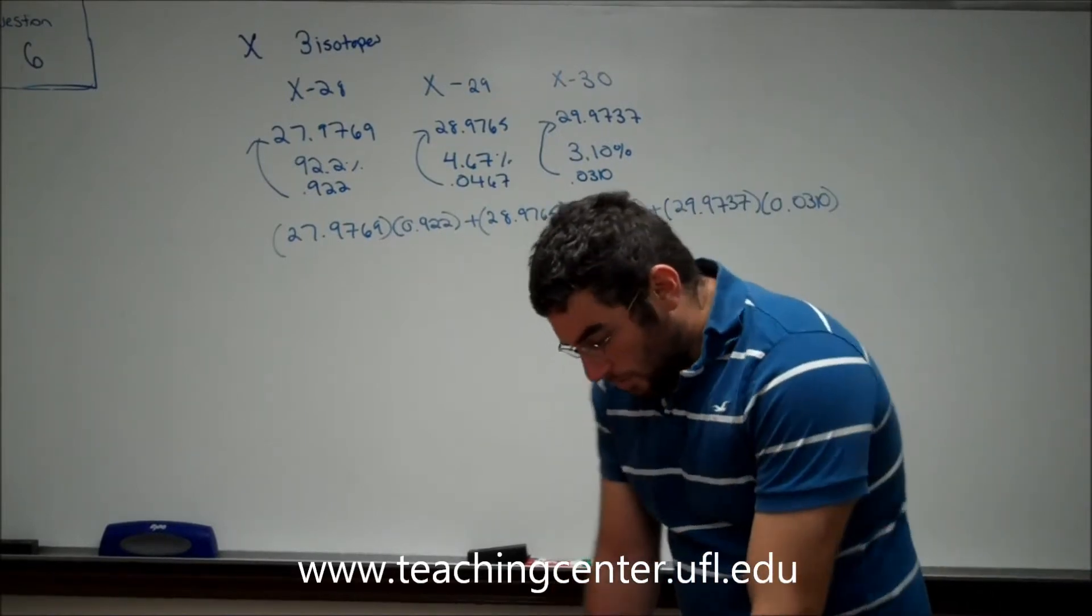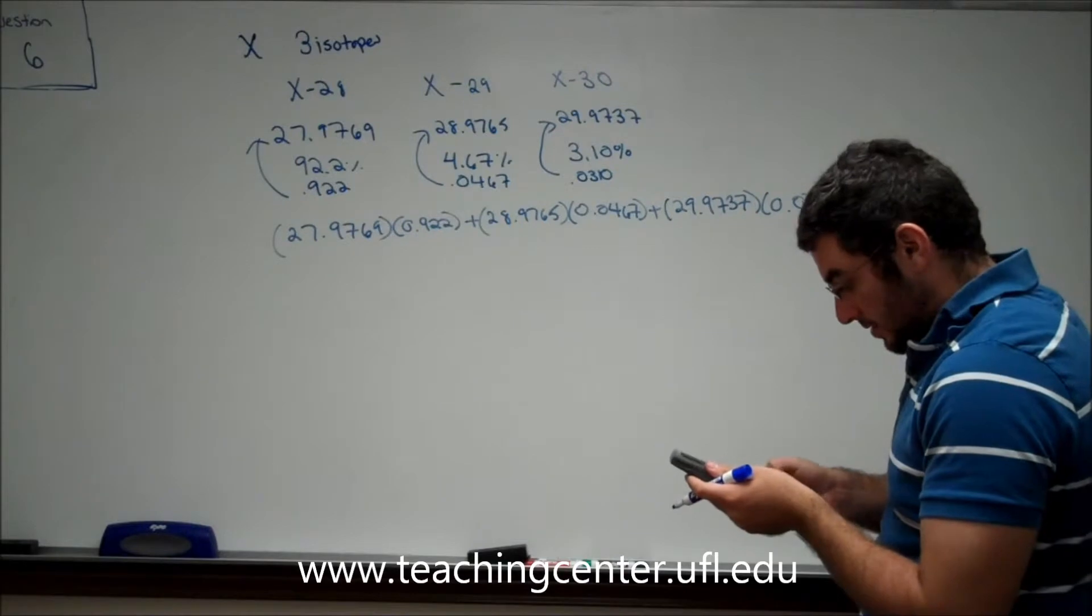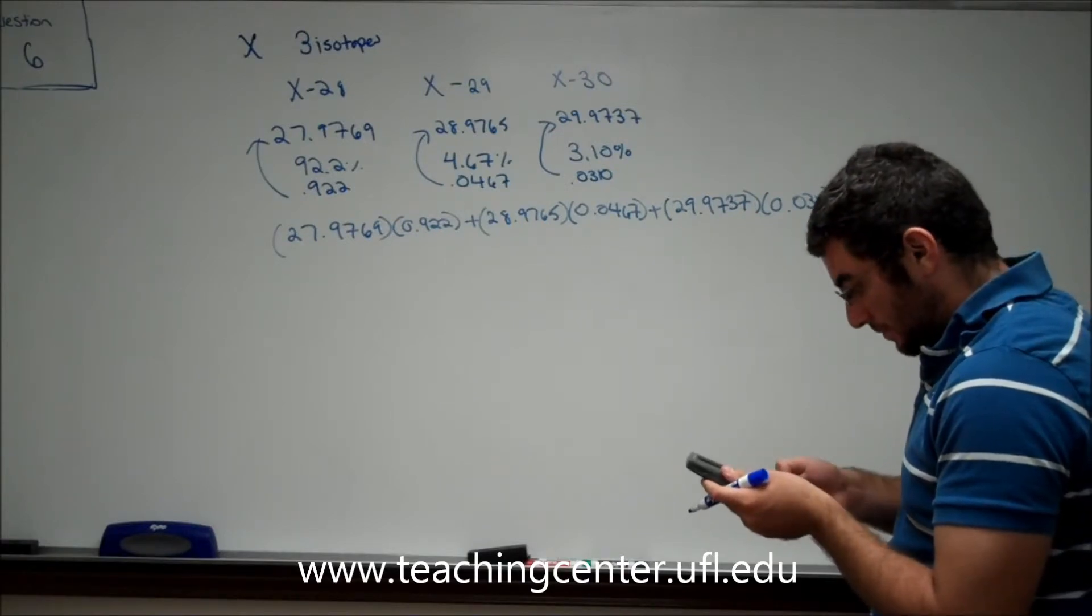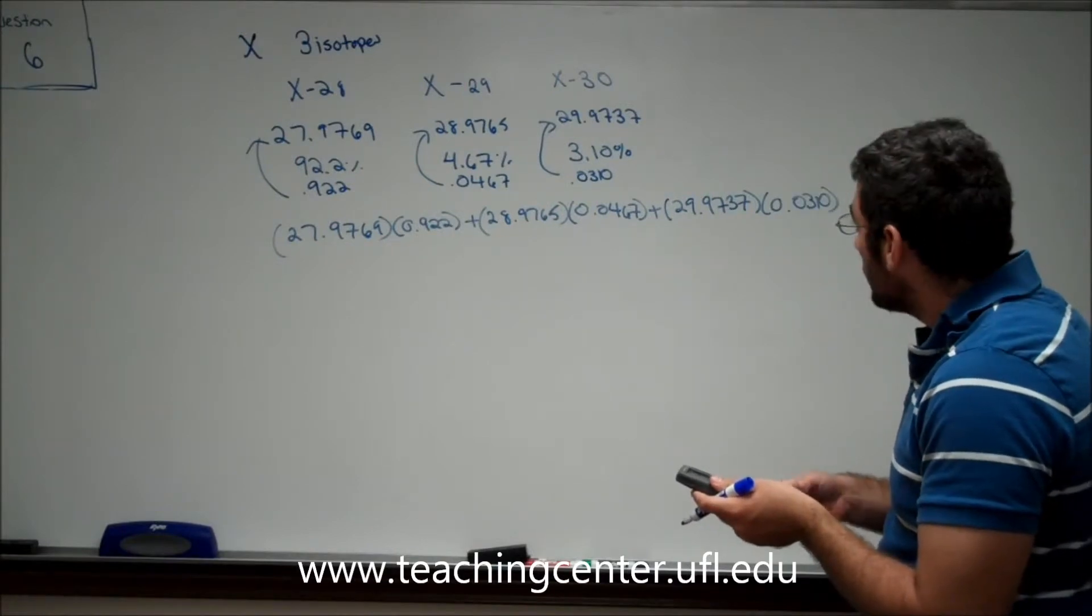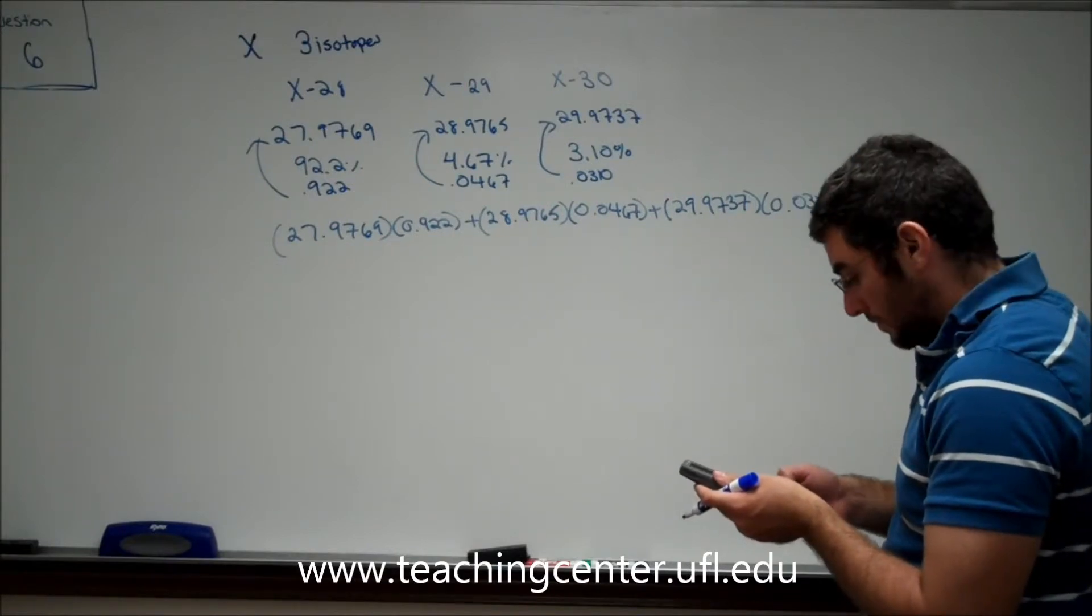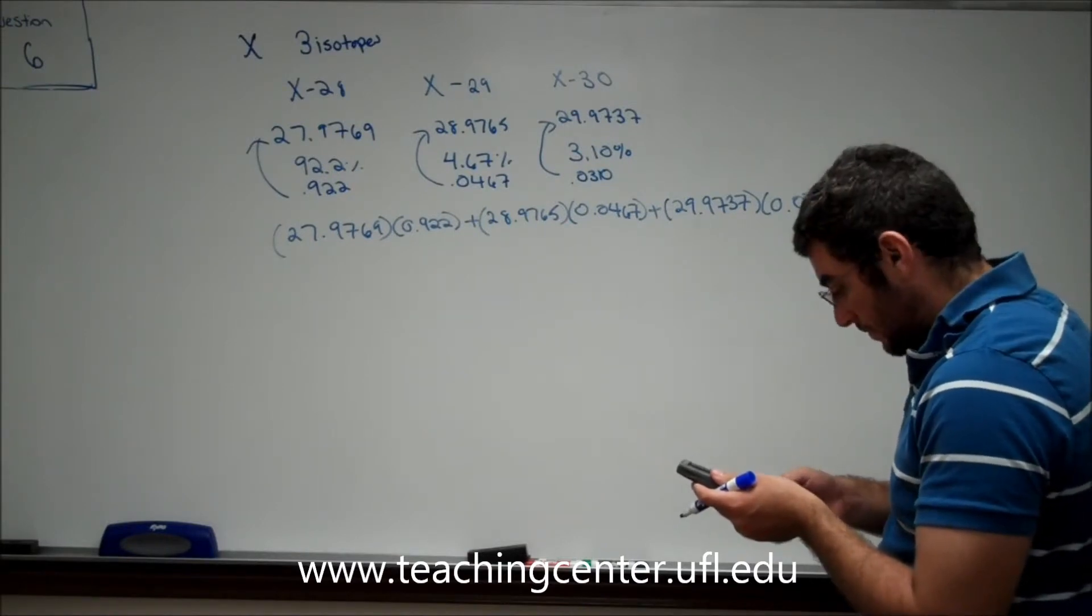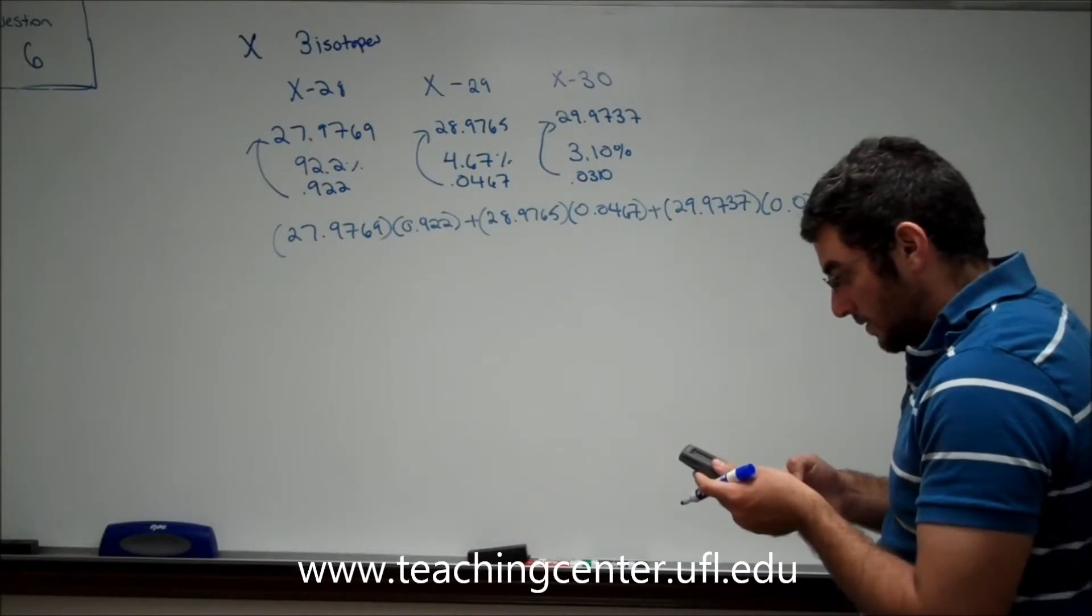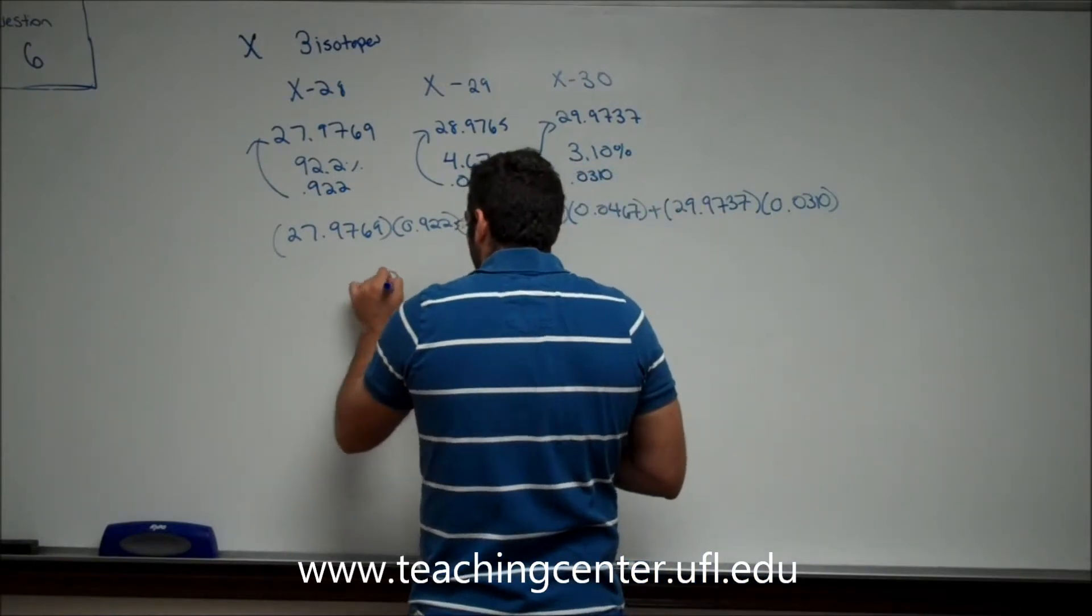So when we plug all of these numbers into our calculator, we get 28.07708.